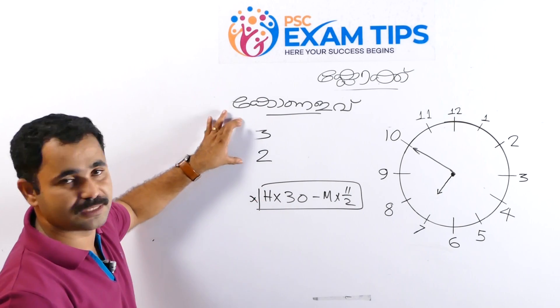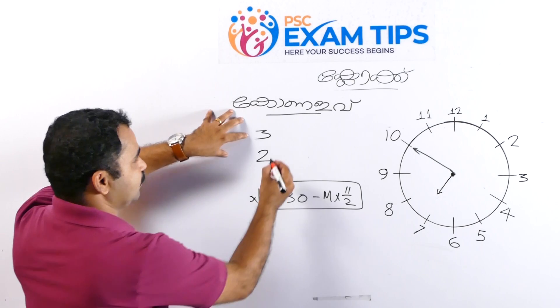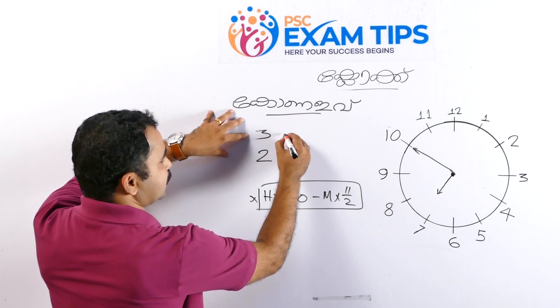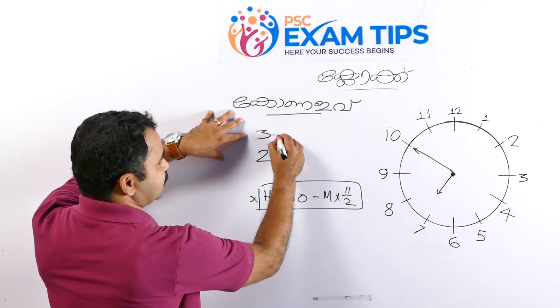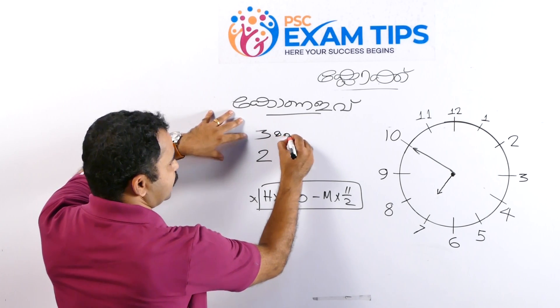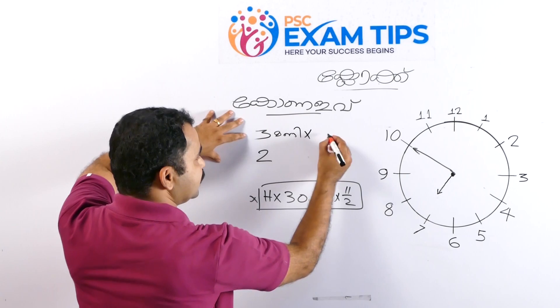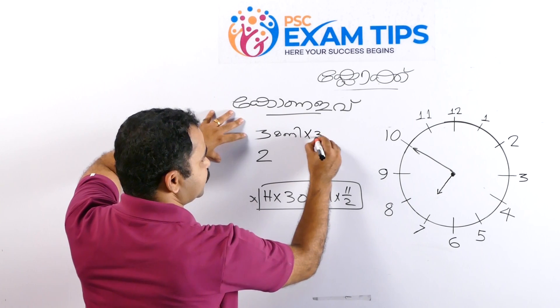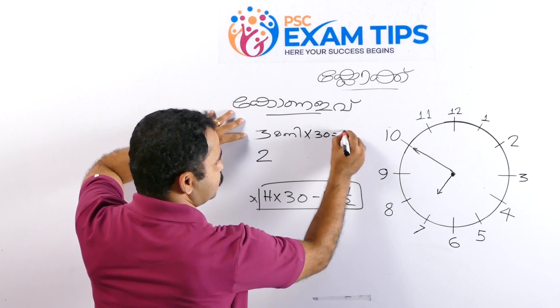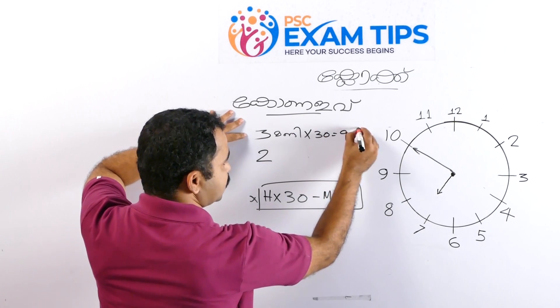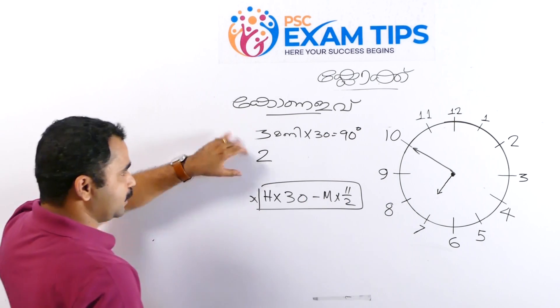That is 3×30, which is equal to 90, which is 90 degrees.